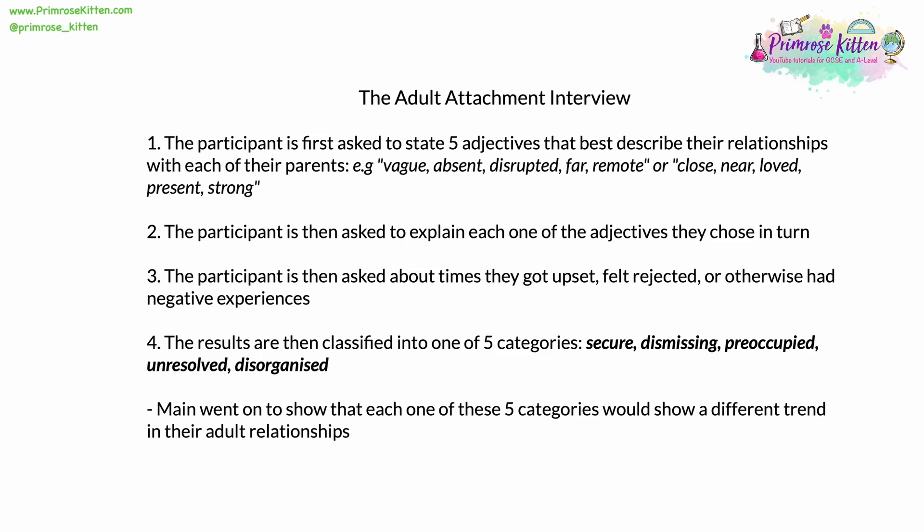The results are then classified by professionals into one of five categories: Secure, Dismissing, Preoccupied, Unresolved, and Disorganized. Main went on to show that each one of these five categories would show a different trend in adult relationships.